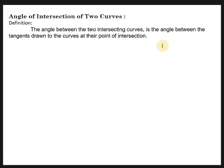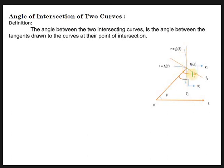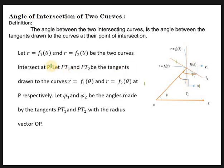Let me draw the diagram. Here, r = F1(θ) is one curve and r = F2(θ) is another curve. Both curves are intersecting at the point P with coordinates (r, θ), and the angle between the initial axis and the radius vector is θ. The two curves intersect at the point P(r, θ). Let Pt1 be the tangent drawn to the first curve and Pt2 be the tangent drawn to the second curve.